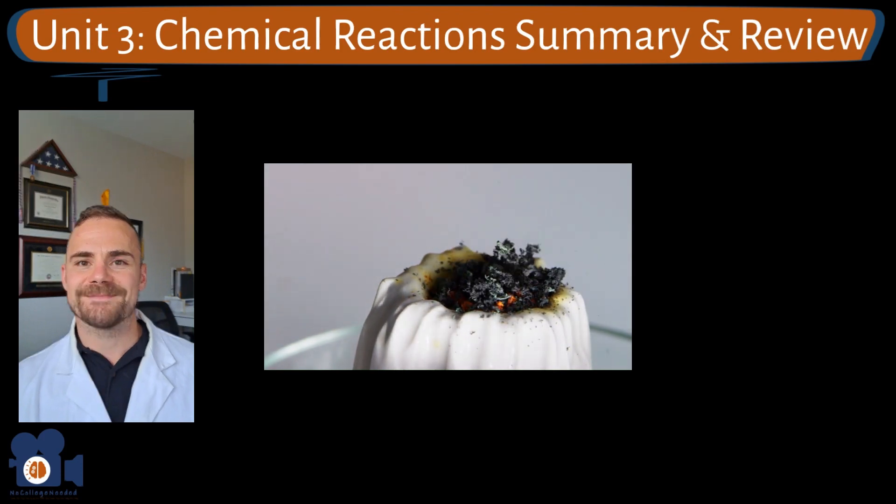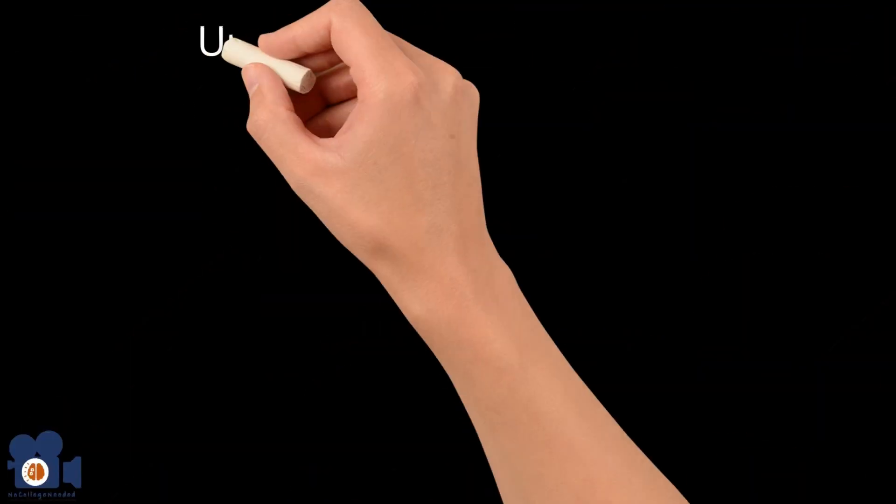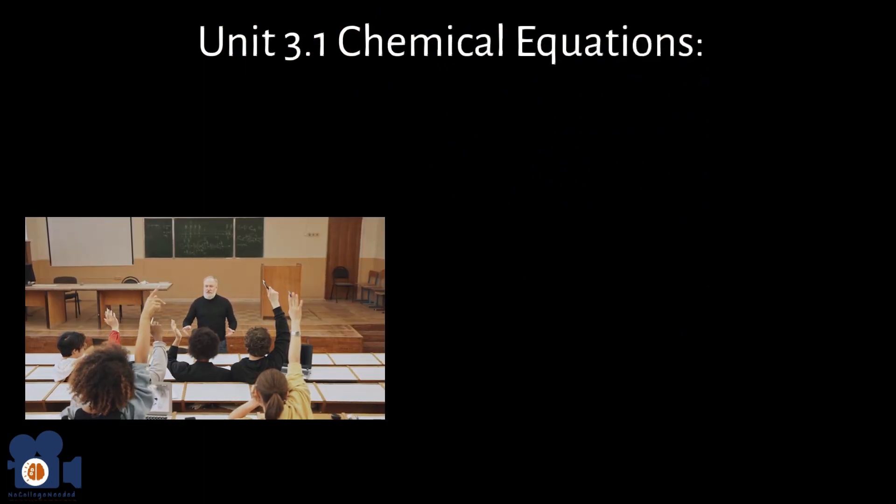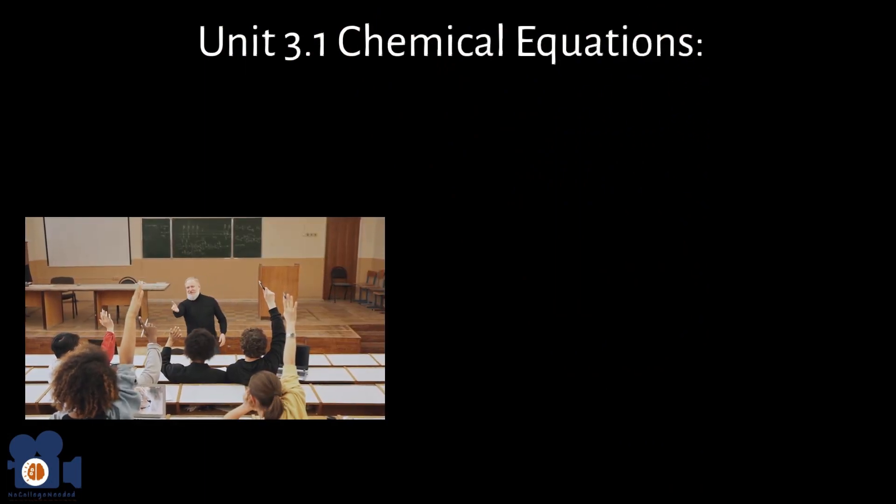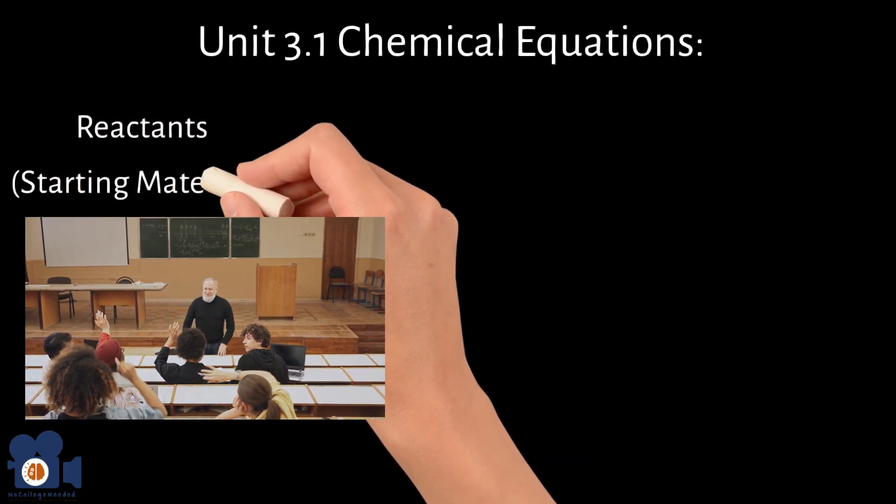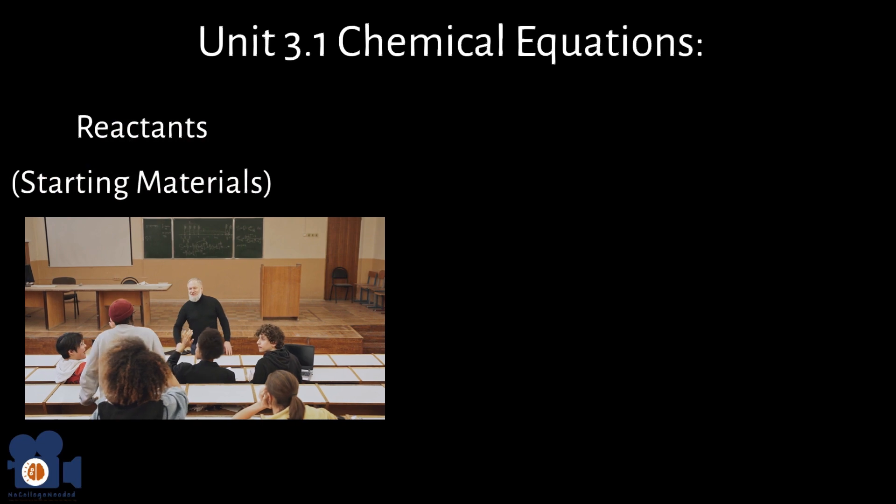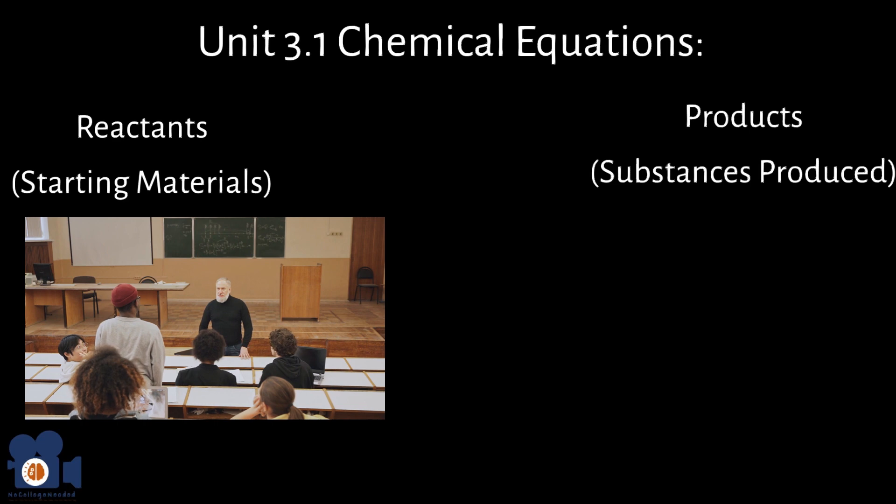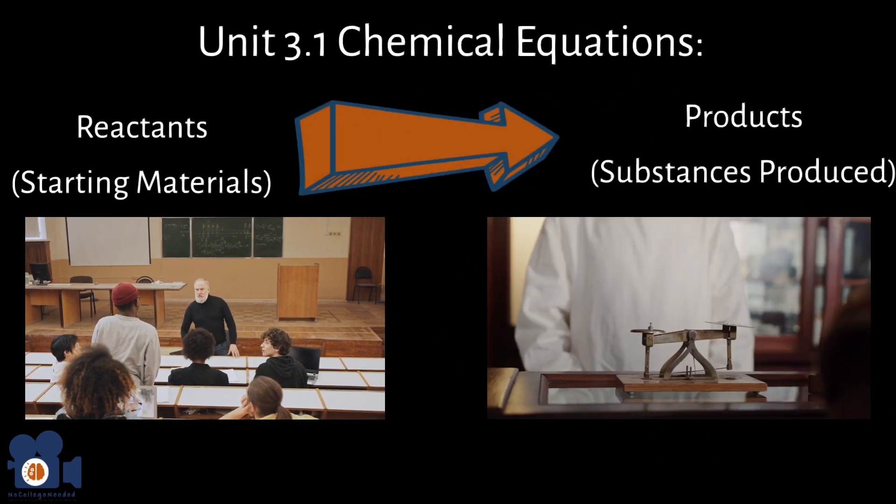In Unit 3.1, we introduce the concept of chemical equations that allow chemists to describe and communicate the details of a chemical reaction in a clear and concise, standardized way. They show the reactants, the starting materials, on the left-hand side and the products, the substances produced by the reaction, on the right-hand side, with an arrow indicating the direction of the reaction.